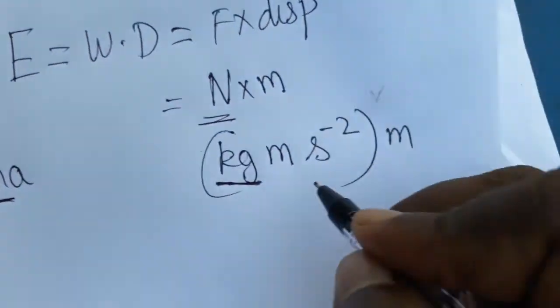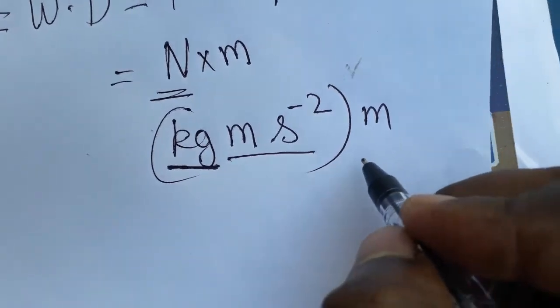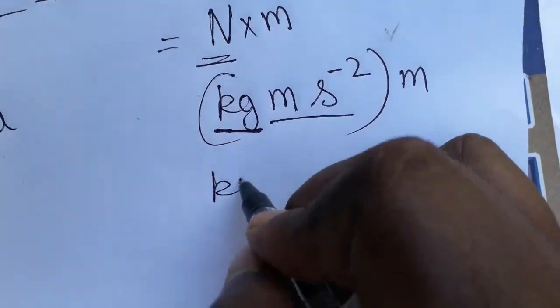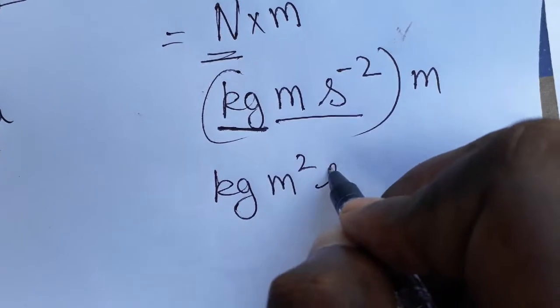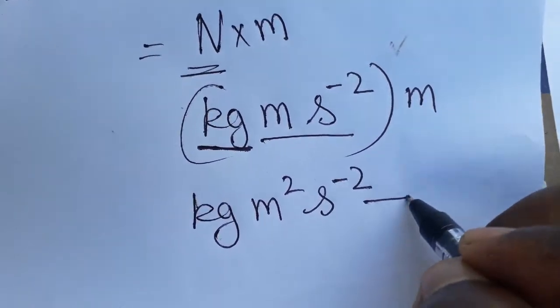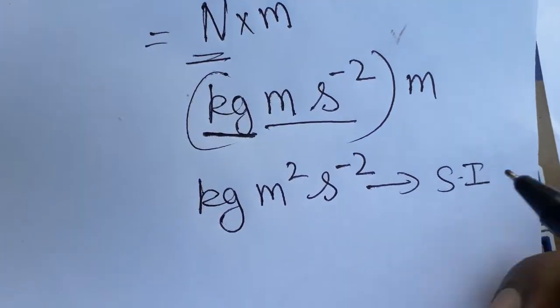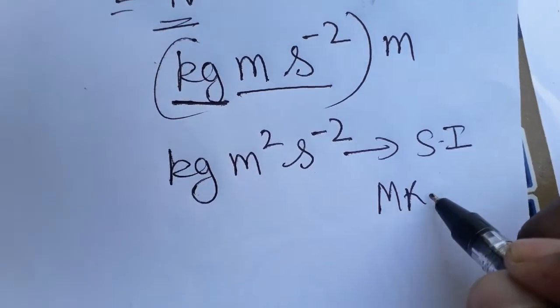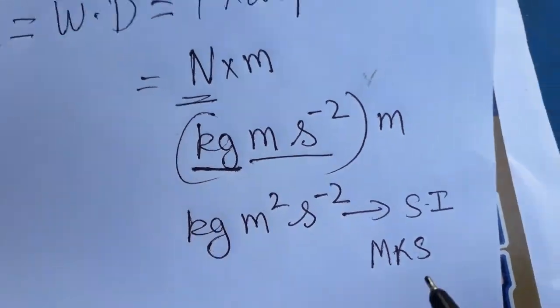The SI unit for mass, meter per second squared is the SI unit for acceleration, and again meter. So we have kg·m²·s^-2. This is the SI unit, which follows the MKS system.